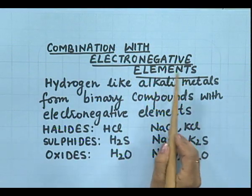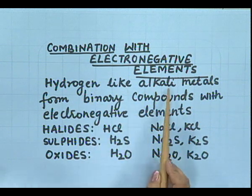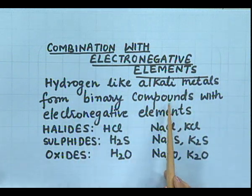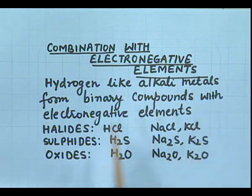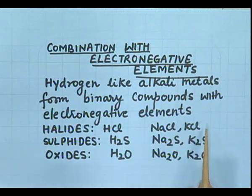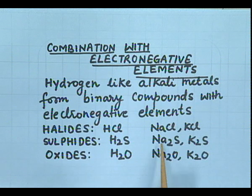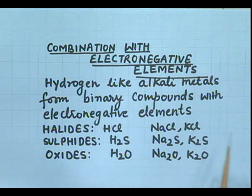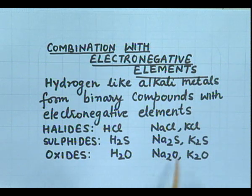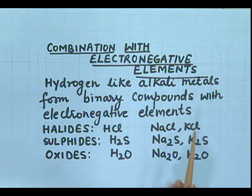Combination with electronegative elements: hydrogen, like alkali metals, forms binary compounds with electronegative elements. Halides: hydrogen forms hydrogen chloride, sodium forms sodium chloride, potassium forms potassium chloride. Sulphides: hydrogen forms hydrogen sulphide, sodium forms sodium sulphide, and potassium forms potassium sulphide. Oxides: hydrogen forms water with oxygen, and sodium and potassium also form the same type of oxides. Again, we can see that hydrogen is resembling the alkali metals.